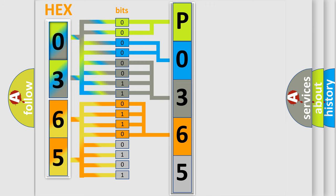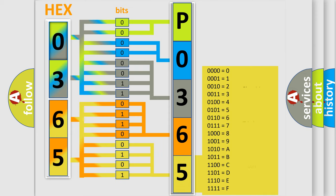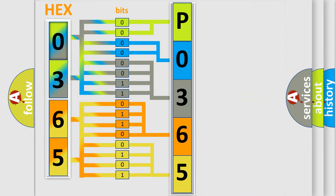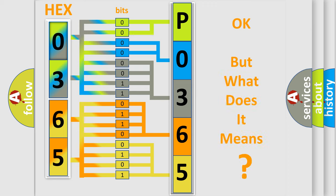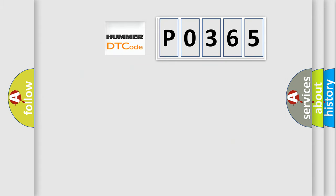A single byte conceals 256 possible combinations. We now know in what way the diagnostic tool translates received information into a more comprehensible format. However, the number itself does not make sense to us if we cannot assign meaning to what it actually expresses. So, what does the diagnostic trouble code P0365 interpret specifically for car manufacturers?